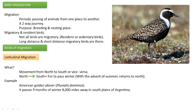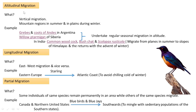The next type is altitudinal migration — it is a vertical migration, from low altitude to high altitude and vice versa. In mountain regions, some birds reside at high altitudes in summer, and with the advent of winter they come back down to lower areas. That is altitudinal migration.